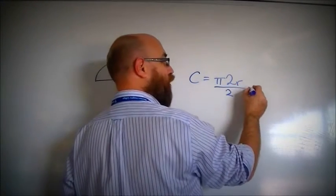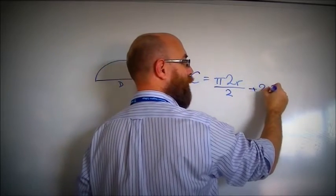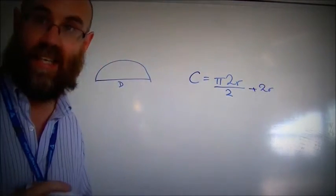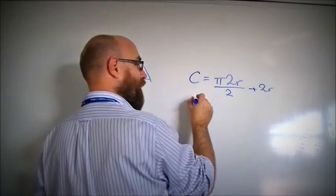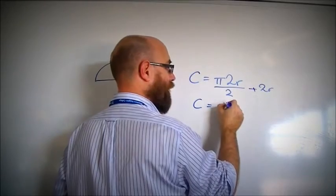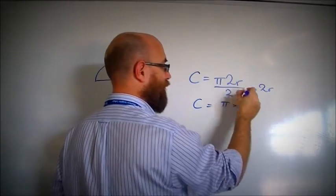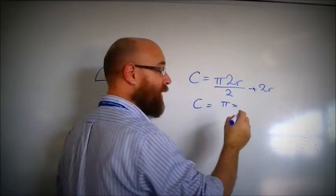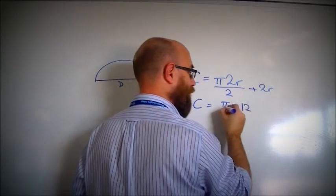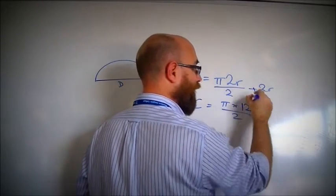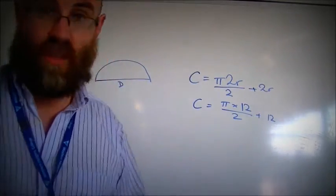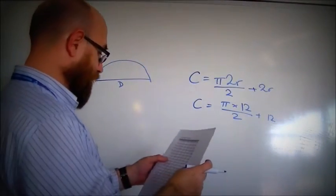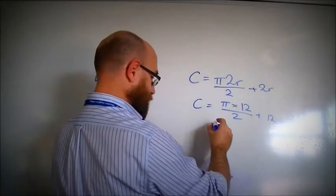I'm going to call that 2r, but I can just as easily call it d. So I said that it was 12 centimetres. So circumference equals pi times r was 6, so 2r is 12, divided by 2, plus 2 times r is 12. I look on my sheet and see that 12 is pi times 12, equals 37.70.